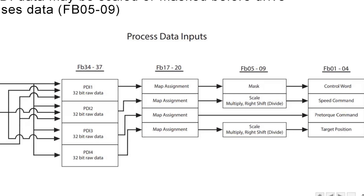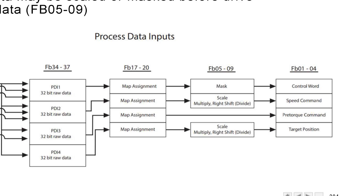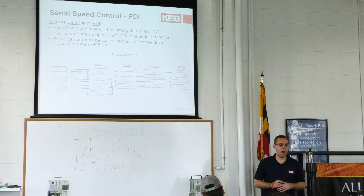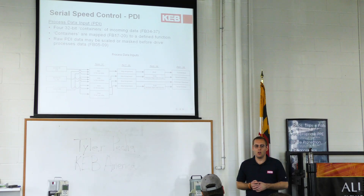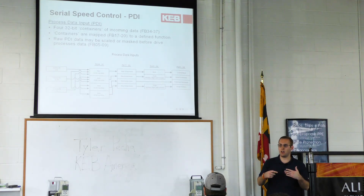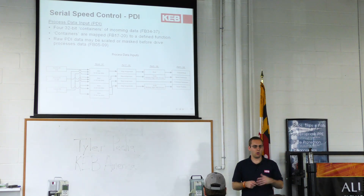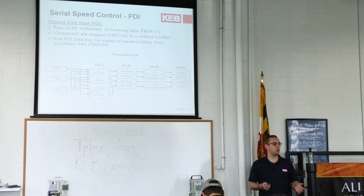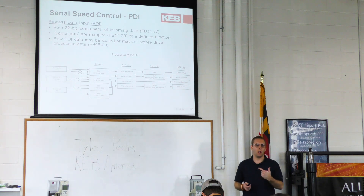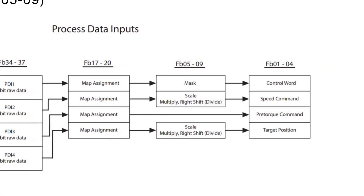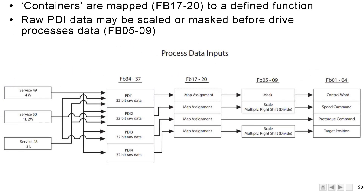Once the data gets its assignment, it's either going to be masked or scaled. Depending on what's coming over from the controller, it may say we don't need to do any scaling. But in the case of the speed command being sent over, it's a raw value — it needs to convert that into something useful the drive can interpret. The value coming over from the controller is unitless, and the drive will do math to scale it to an RPM value. Ultimately it ends up in parameters FB01 through FB04: the control word, the speed command, the pre-torque command, and the target position.